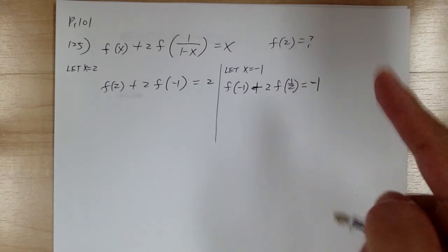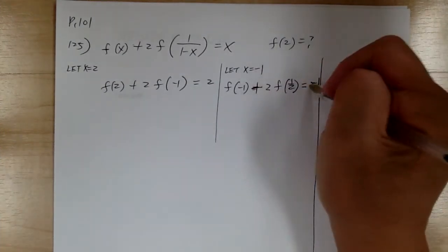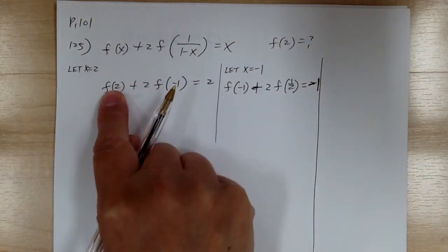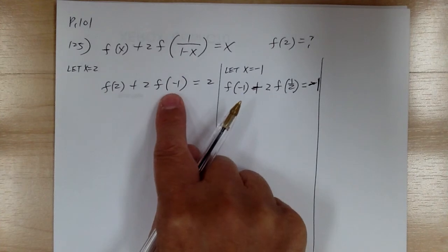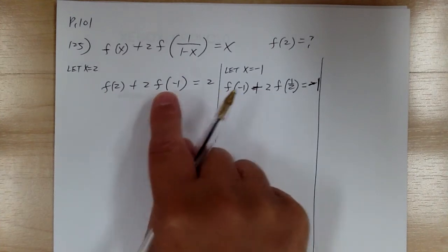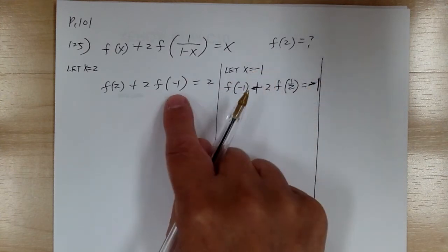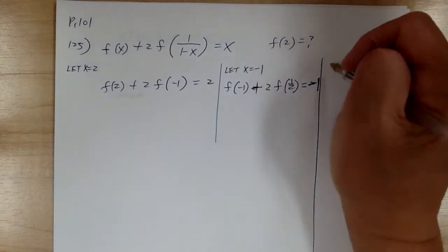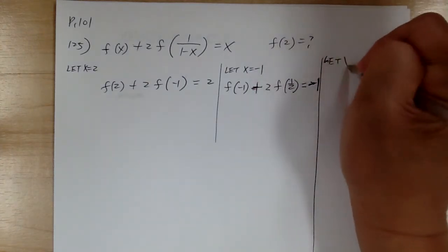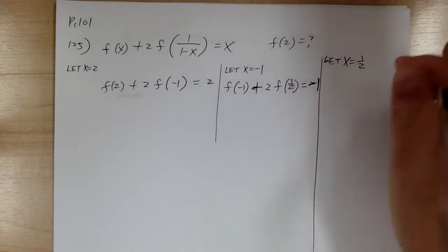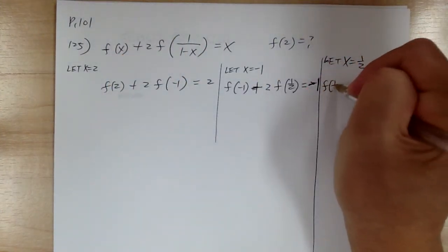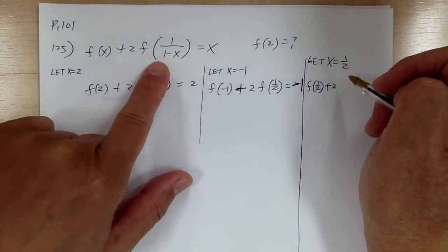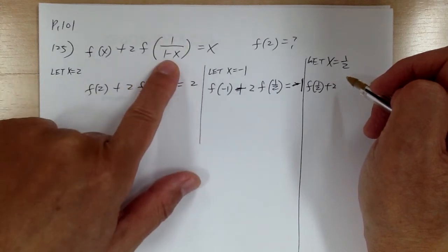So you keep doing that — eventually you come to a fourth cycle. You need f of 2, so you set x equal to 2, but you end up with f of negative 1. So let x equal to negative 1, and you end up with one half. Continue by letting x equal to one half, substituting into the equation: f of one half plus 2 times — putting one half in: 1 minus one half gives one half, and 1 over one half becomes 2. So that cycles back to f of 2.